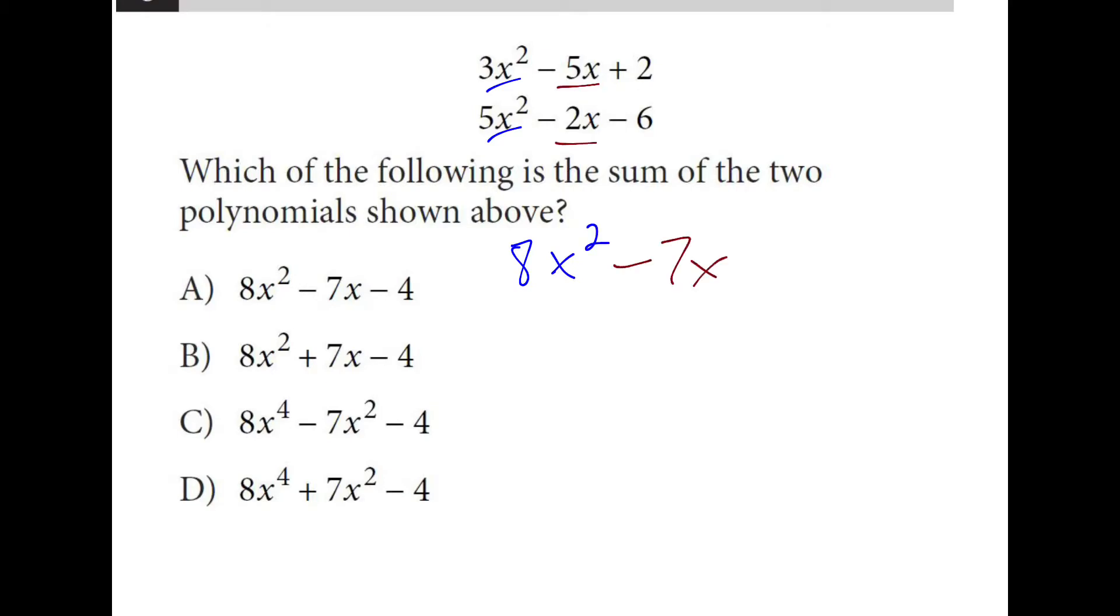For the x terms, I have negative seven after I combine. And the number terms, I have minus four. So eight x squared minus seven x minus four.